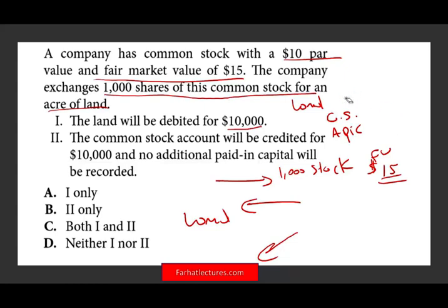They're asking: do we debit land $10,000? How do we deal with this? How much do we value the land? You value the land based on the fair value of the asset you gave up. Let's assume instead of 1,000 shares of stock with a fair value of $15, you gave them $20,000 cash — that's easy, $20,000 equals $20,000. Here, what you gave them is 1,000 shares of stock, each worth $15. That means you gave them $15,000 worth of value. Simply put, the land will be debited at $15,000.